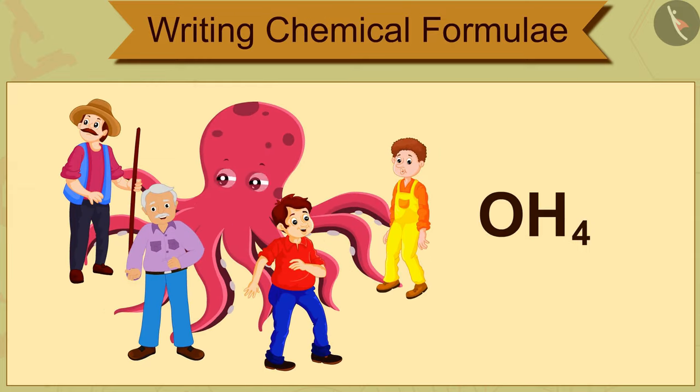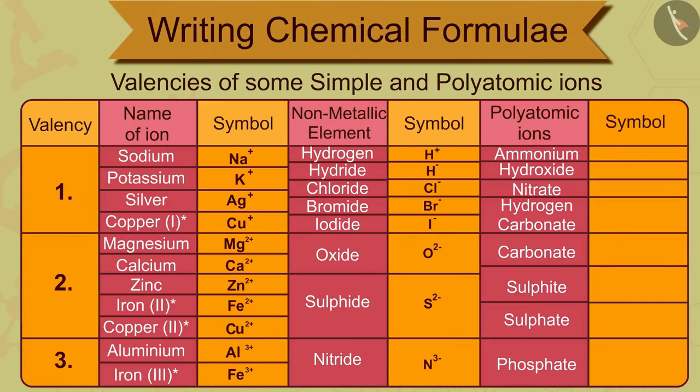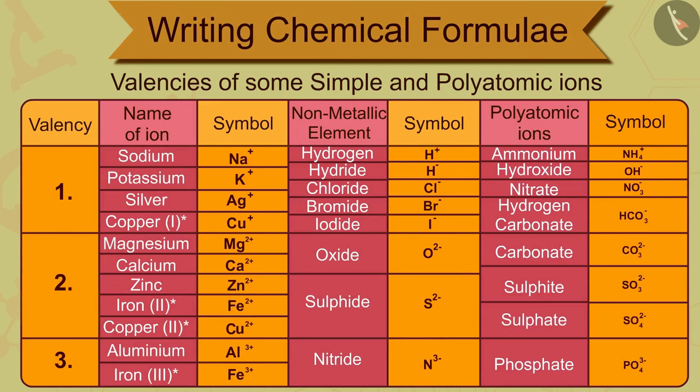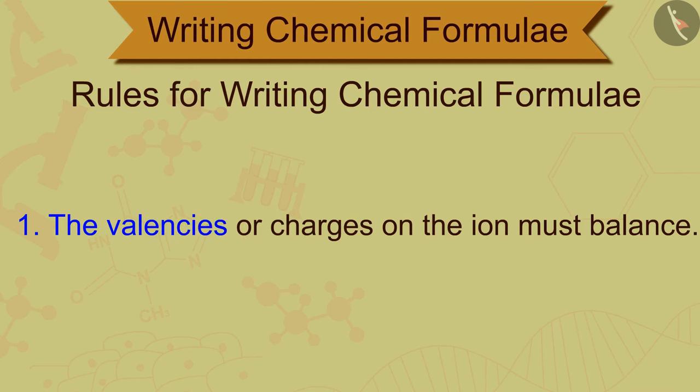Here you can see the valencies of some simple and polyatomic ions. Let us now look at the rules for writing chemical formulae. Rule 1: The valencies or charges on the ion must balance.